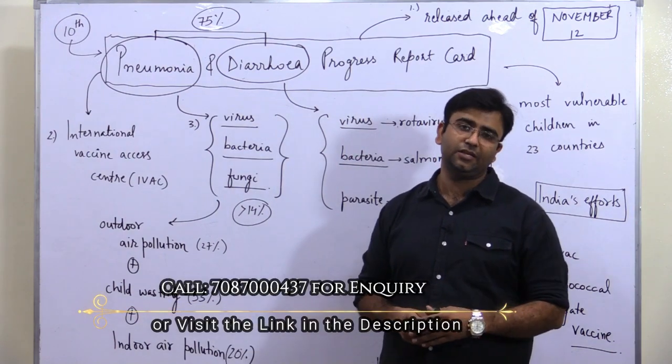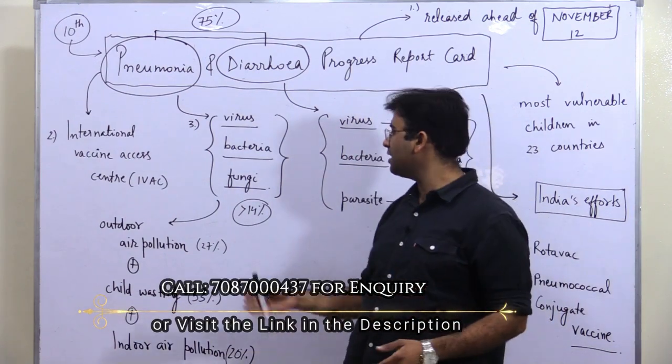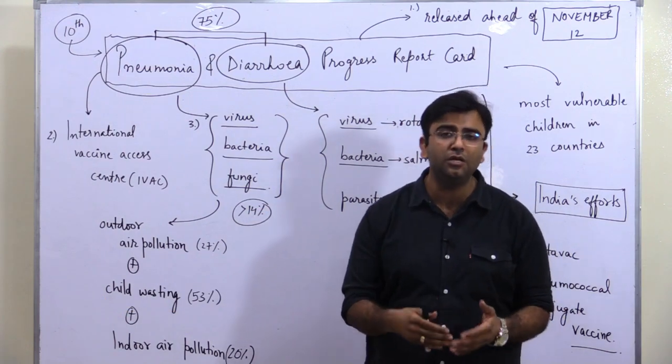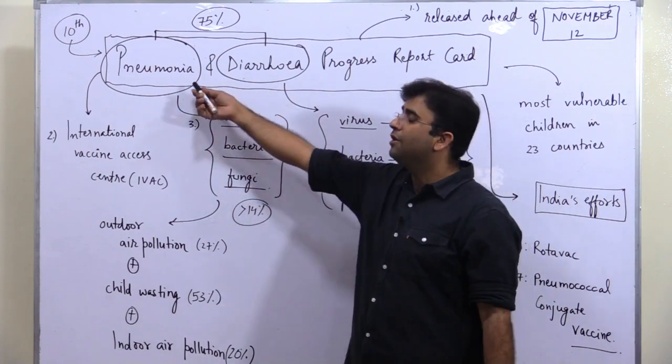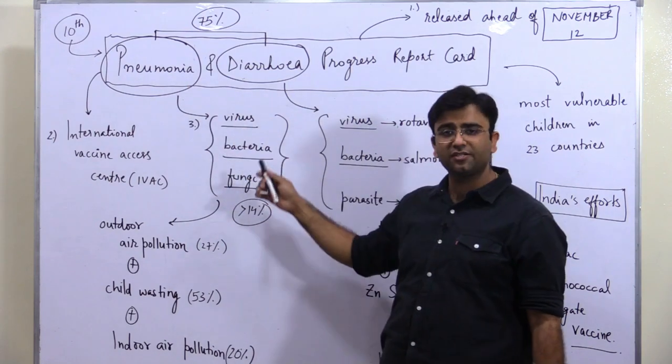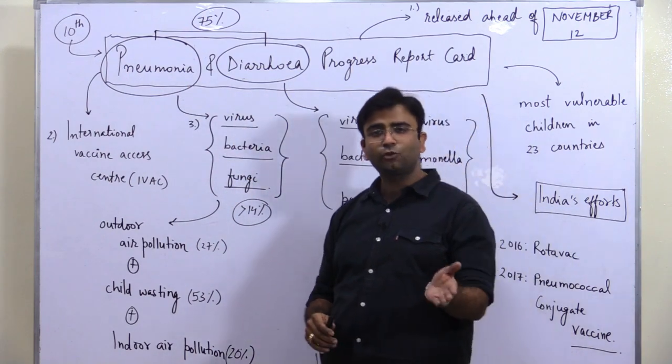In 2018, more than 14% of global children deaths were because of pneumonia caused by either virus, bacteria, or fungi. Now let's talk about diarrhea.